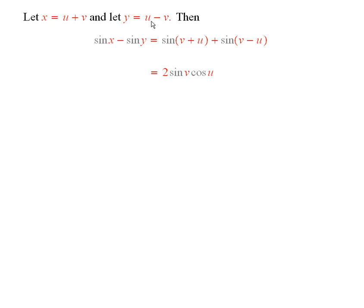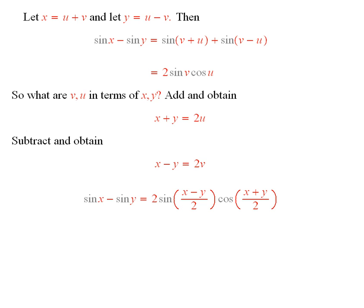But remember the sine is odd, so that's the same as plus the sine of v minus u. Now you go to problem number 5, or the earlier problem that it refers to, and this expression is equal to 2 times the sine of v times the cosine of u.